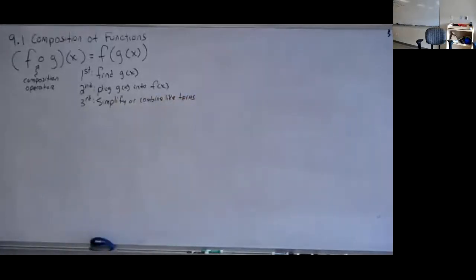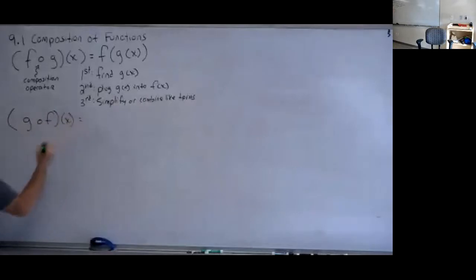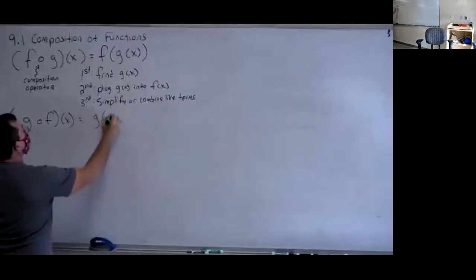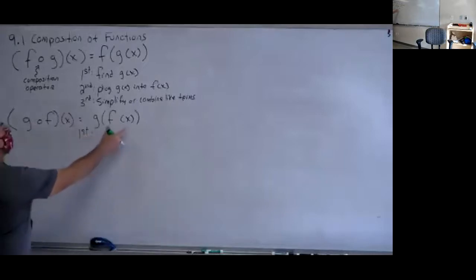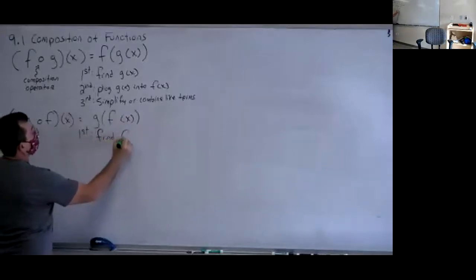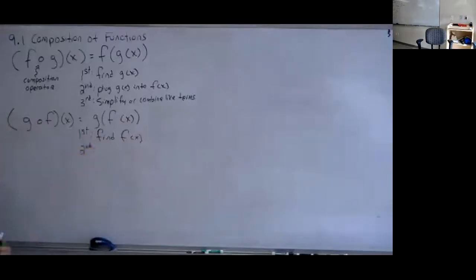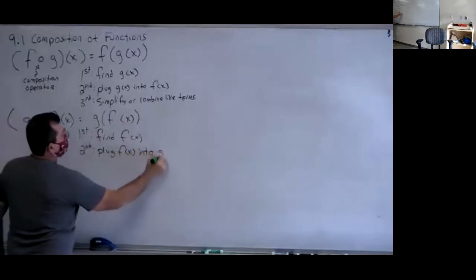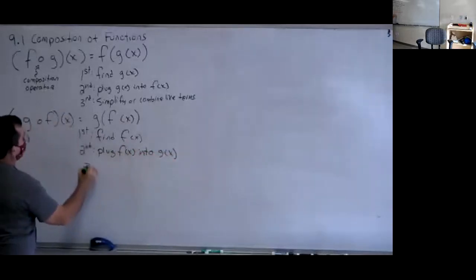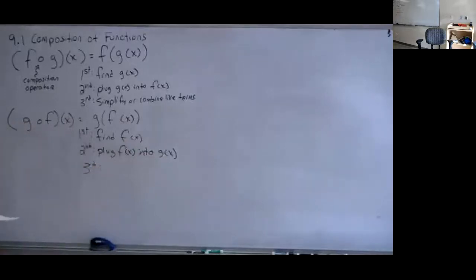The other style will be g composed f of x — same thing, different order. On this one I would have g of f of x. Still following order of operations, work the innermost parentheses first, so the first thing I would find is f of x. Then I would plug f of x into my g of x, and then third, simplify or combine like terms.